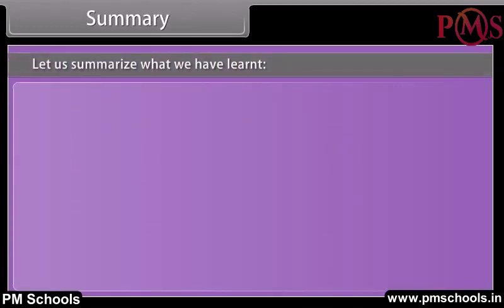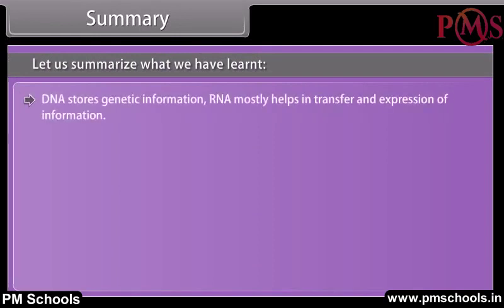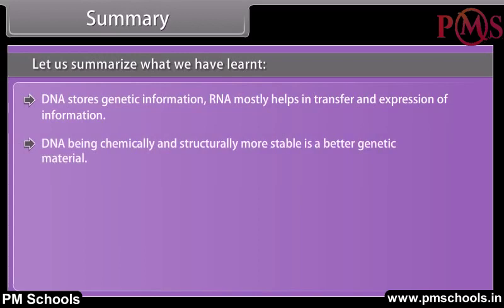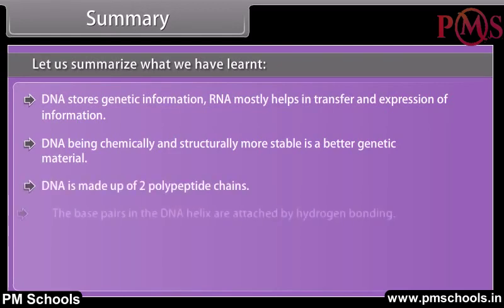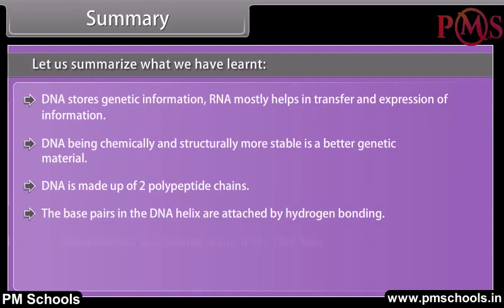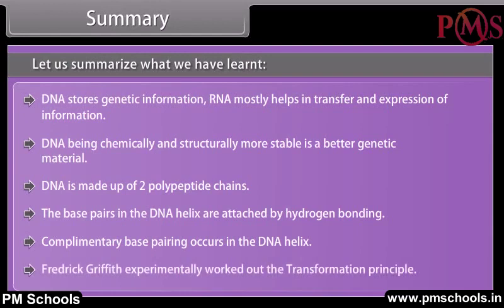Let us summarize what we have learned. DNA stores genetic information. RNA mostly helps in transfer and expression of information. DNA, being chemically and structurally more stable, is a better genetic material. DNA is made up of two polynucleotide chains. The base pairs in the DNA helix are attached by hydrogen bonding. Complementary base pairing occurs in the DNA helix. Frederick Griffith experimentally worked out the transformation principle.